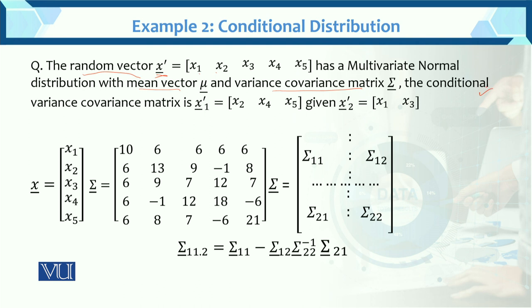Now the conditional variance-covariance matrix is this. The condition is: let x, where x consists of x2, x4, x5 variables separate, and second, in the partition we have x1, x3.